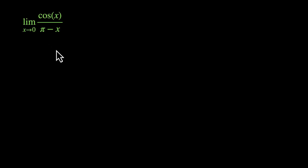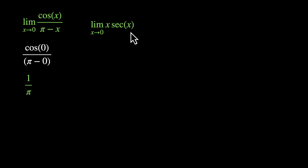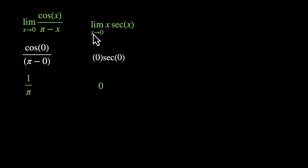Now this next one has cos in it: limit x approaches 0, cos(x) / (π - x). Before thinking about substitutions, try putting x = 0. Cos(0) is 1, π - 0 is π, the denominator is not 0 — this is well defined. So we just substitute x = 0: cos(0) / (π - 0) = 1/π. The answer is 1/π. Next, very similar: limit x approaches 0, x times sec(x). Substituting x = 0: sec(0) is 1, so this is 0 times 1 = 0. Since 0 is in the numerator, not the denominator, there's no problem and the answer is 0.